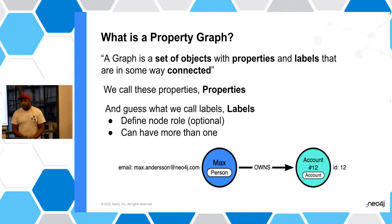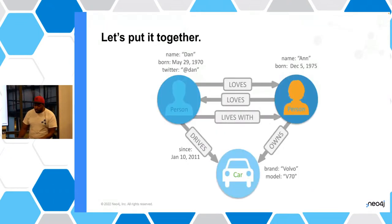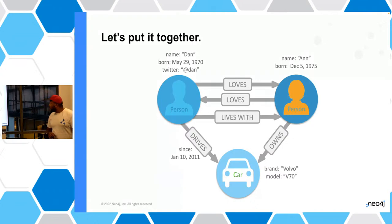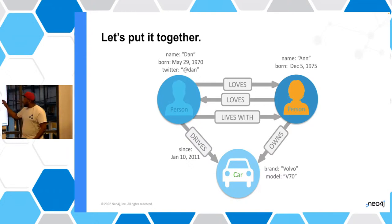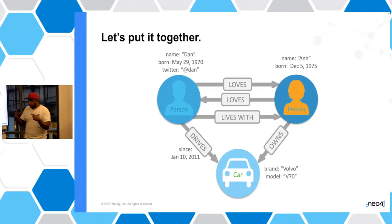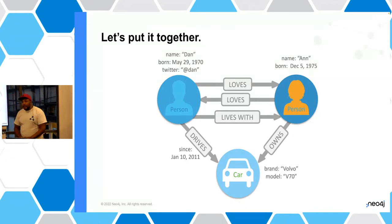You can also have more than one label — for example, a person could also be an officer, and so on. If we put all of this together, this is how a simple model might look: you have two persons, one named Dan and one named Anne. Dan loves Anne and Anne loves him back. Notice the directions — we have that Dan lives with Anne, but not the other way, telling us it might be Anne's apartment. You'd see they don't both drive that car — Dan drives it but Anne owns it.